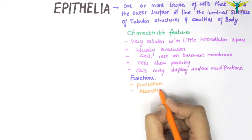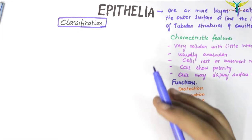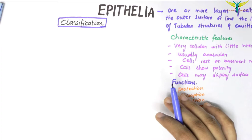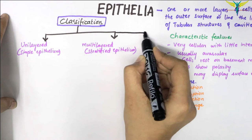Now let's learn about the classification of the epithelia. An epithelium that consists of only one layer of cells is known as unilayered or simple epithelium. When the epithelium consists of many layers of cells, it is called multilayered or stratified epithelium. The other type is the pseudostratified epithelium.